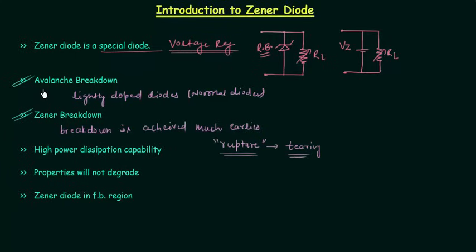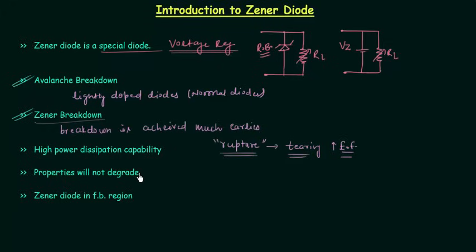So there is a difference between avalanche breakdown and Zener breakdown. In case of avalanche breakdown, electrons gain high kinetic energy and break the covalent bonds. On the other hand, in case of Zener breakdown, there is direct rupture of covalent bonds because of the high electric field. Now we will move to the next point: the power dissipation capability. Zener diodes are special diodes whose power dissipation capabilities are much more than the normal diode, and because of this they can easily work in the breakdown region.